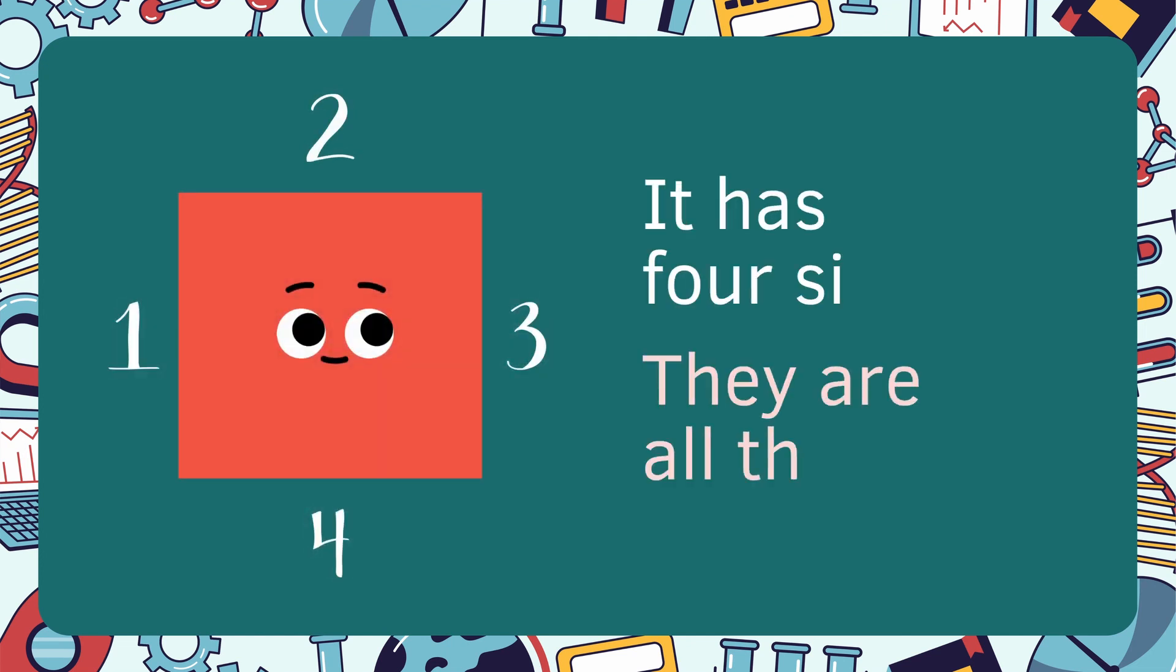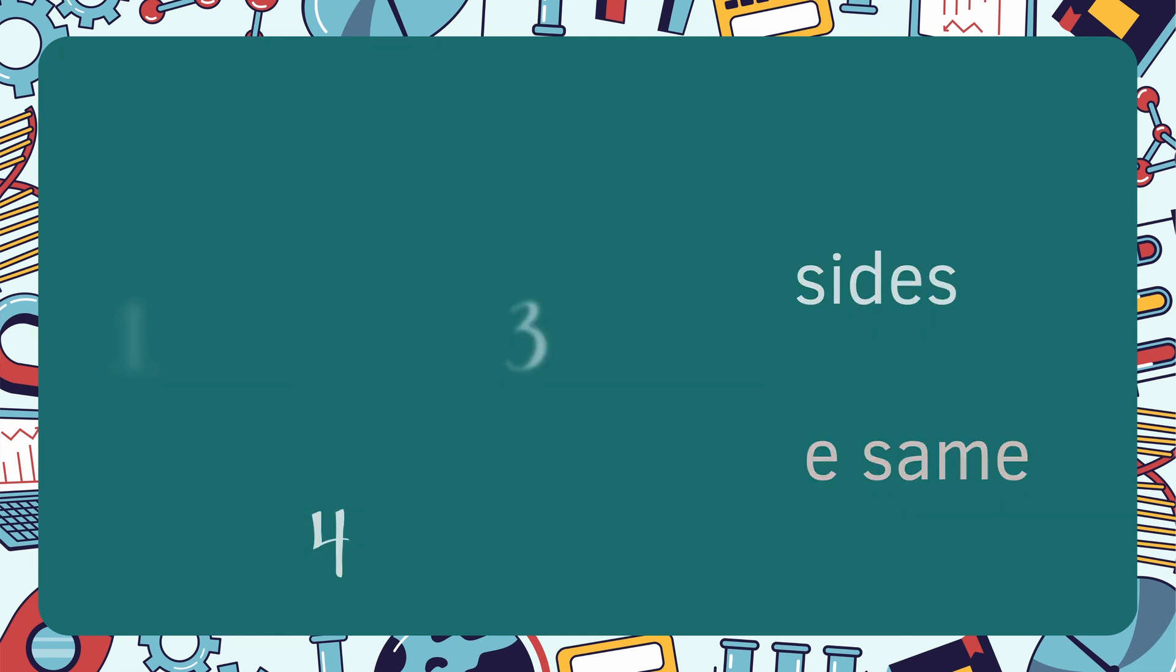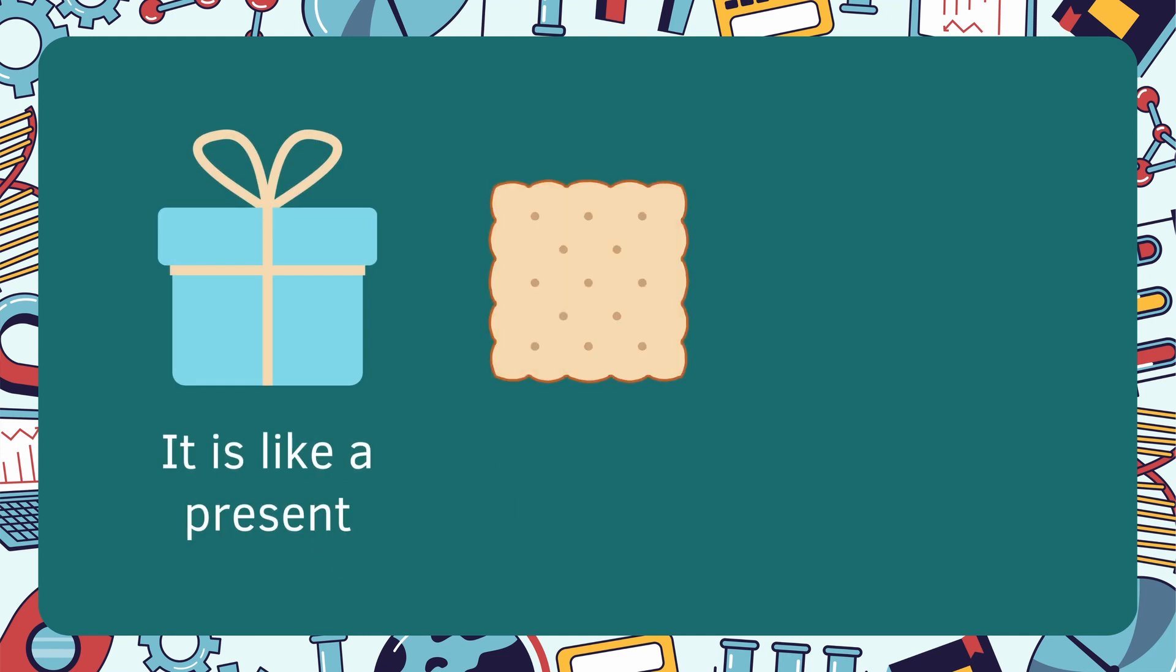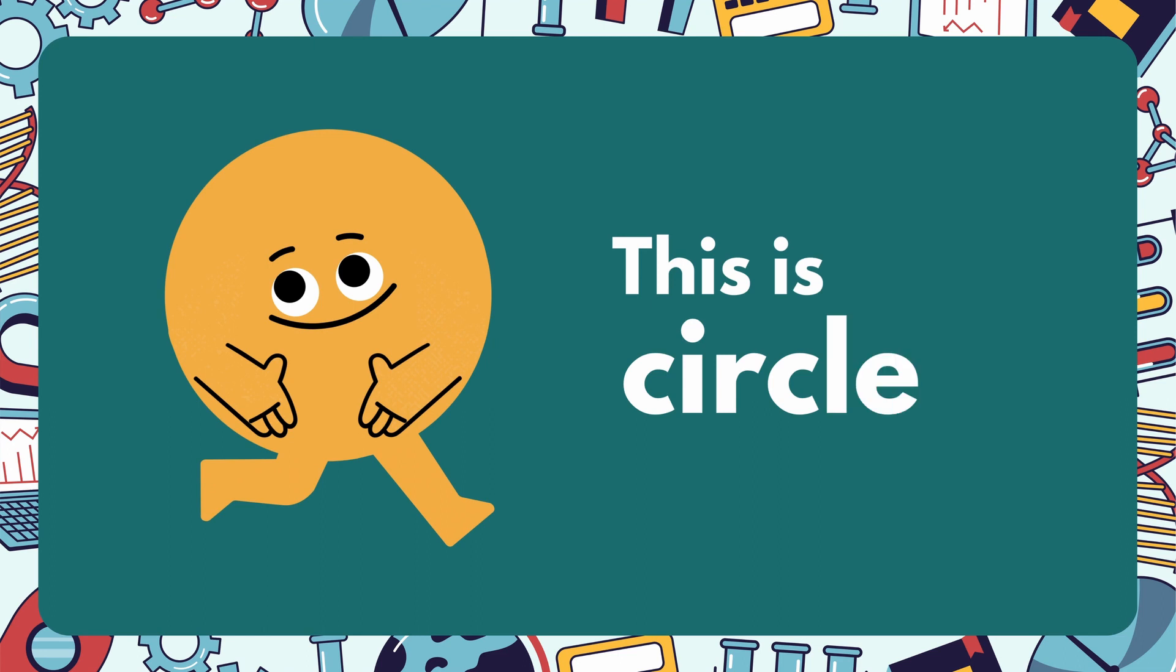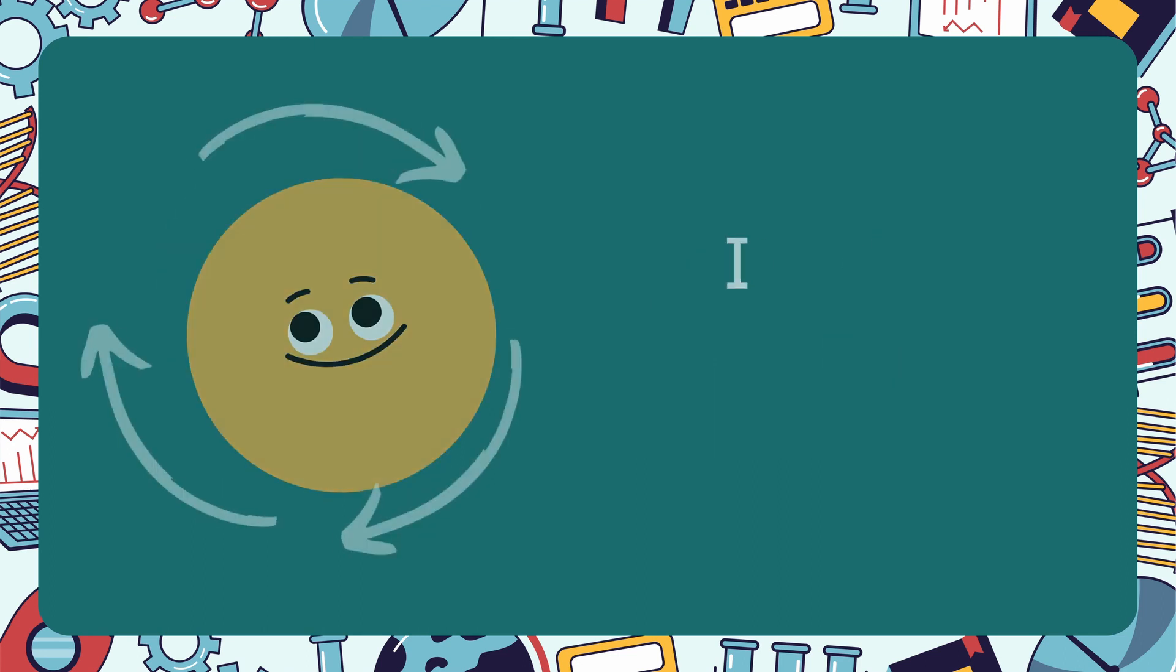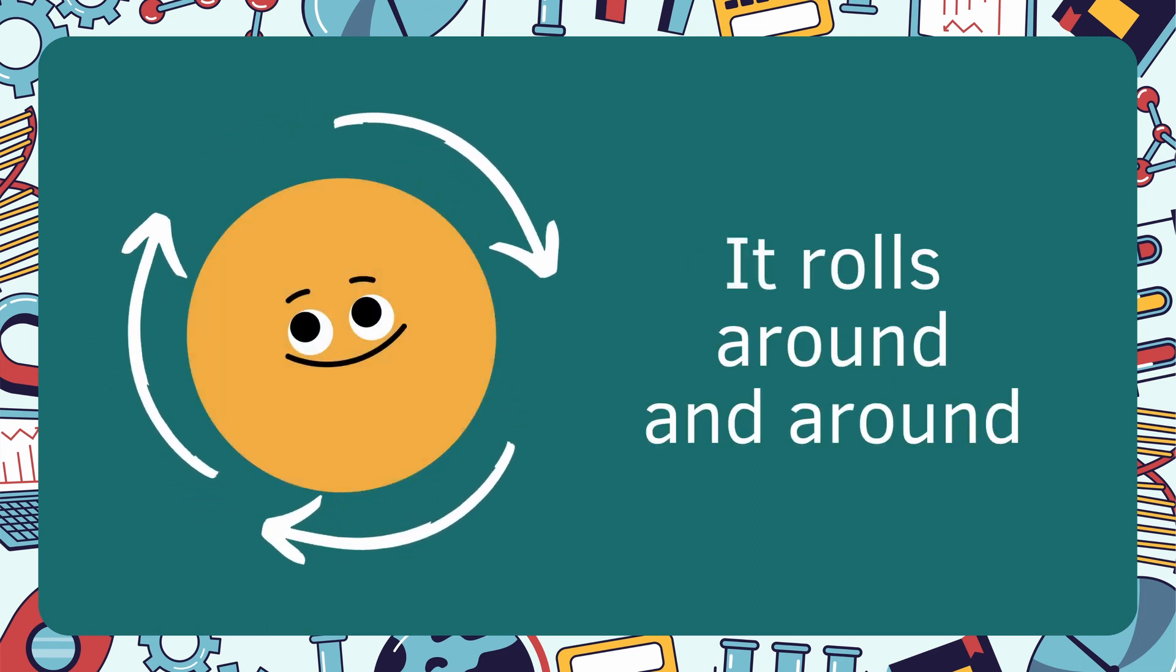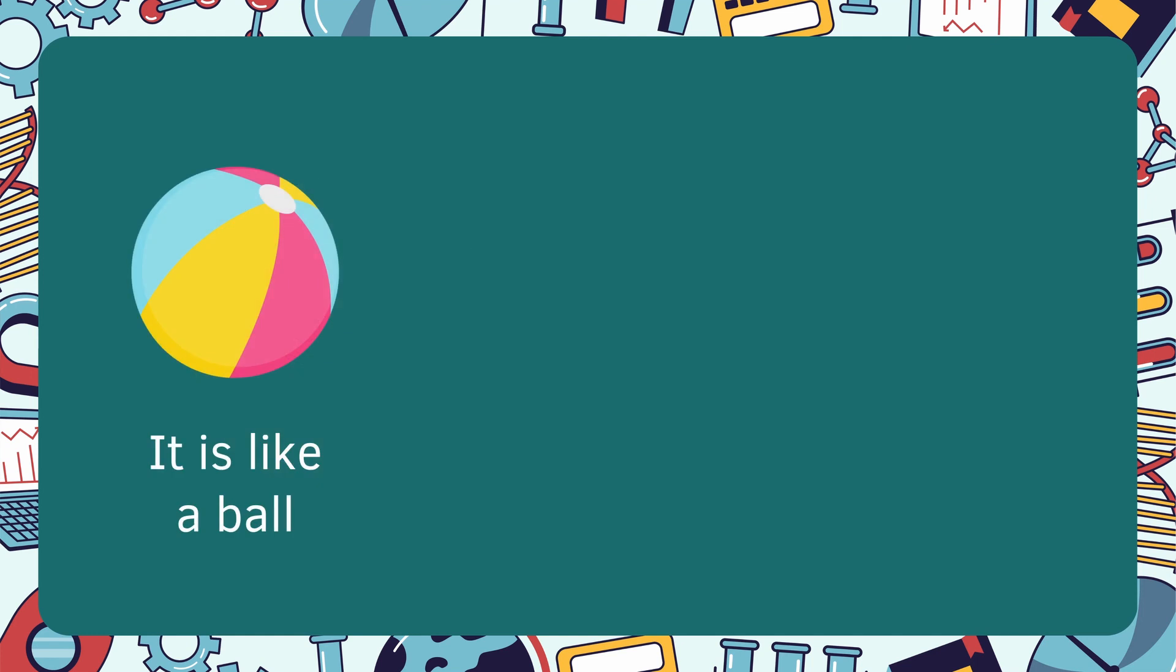It has four sides. They are all the same. It is like a present, it is like a cracker, it is like a window. This is the circle. It rolls around and around. It is like a ball.